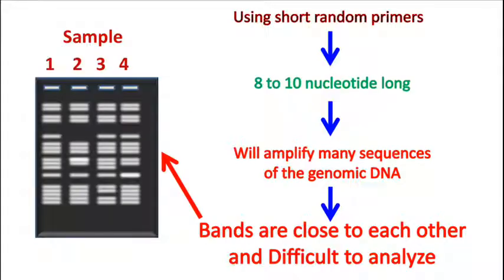Drawbacks. One of the drawbacks of RAPD is that random primers can amplify many fragments of the genomic DNA. Hence, bands obtained are closely spaced and difficult to analyze.